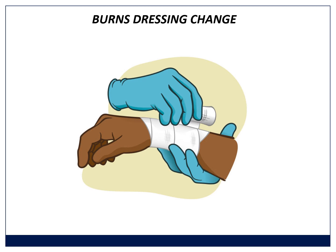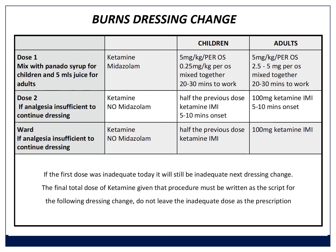For burns dressing changes, ketamine is very useful. Probably the best recipes I've seen were developed by Dr. Nikki Aloto, president of the South African Burn Society. Her protocol — which she shares widely — has different recipes for children and adults, mostly using oral medication: ketamine and midazolam mixed with Panado syrup. If that's insufficient to continue the dressing, a second dose is given intramuscularly in the ward. Rules include fasting for two hours before. Also remember: if the first dose was inadequate today, next time it will definitely be inadequate again, as people develop tachyphylaxis — resistance to ketamine.